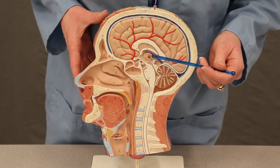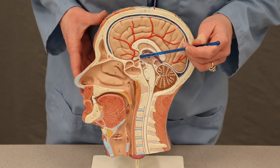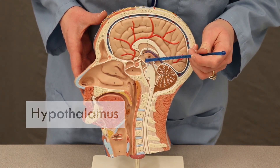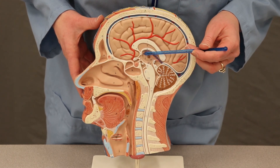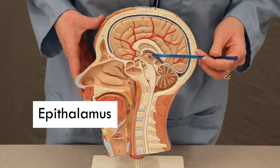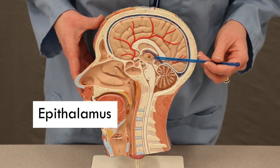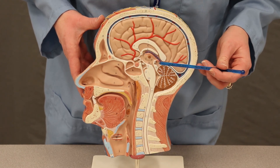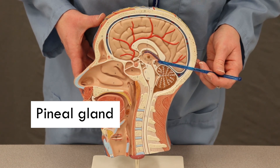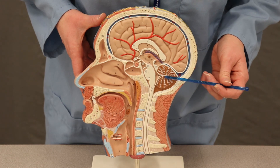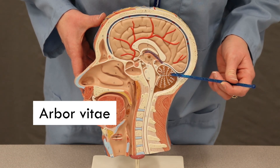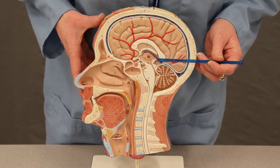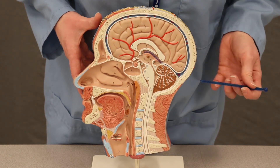In front of and below the thalamus, we have the hypothalamus — a somewhat triangular-shaped area. Above the thalamus, we have the epithalamus, which ends in a little pinecone-shaped gland called the pineal gland. The pineal gland sits right above the arborvitae, or tree of life, in the cerebellum — all that white matter in the cerebellum. A memory aid: the pineal gland is the pinecone above the tree, the arborvitae.